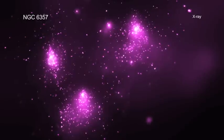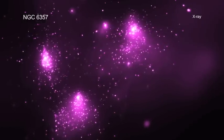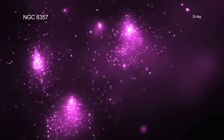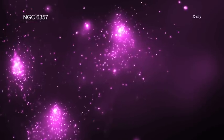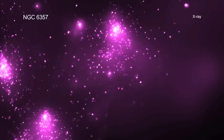X-ray data from Chandra and Rosat reveal hundreds of point sources, which are the young stars in NGC 6357, as well as diffuse X-ray emission from hot gas.